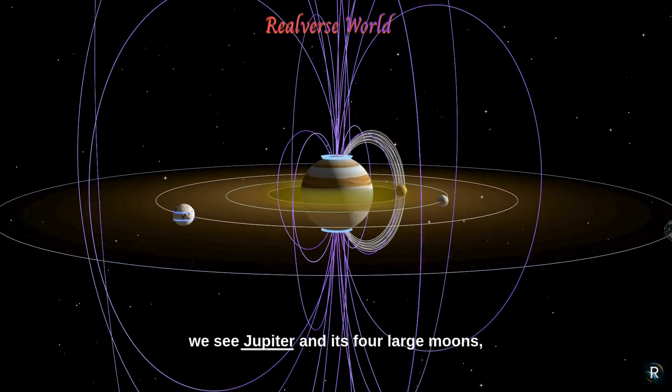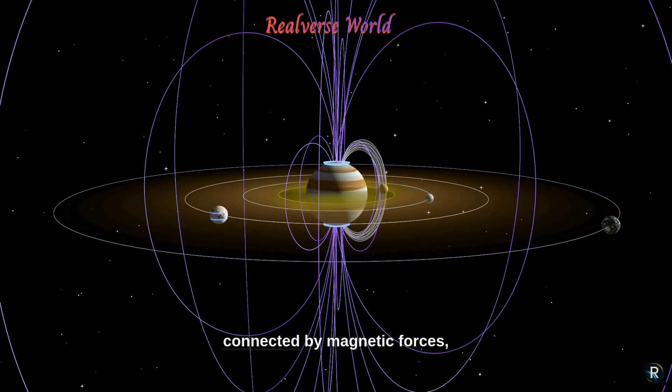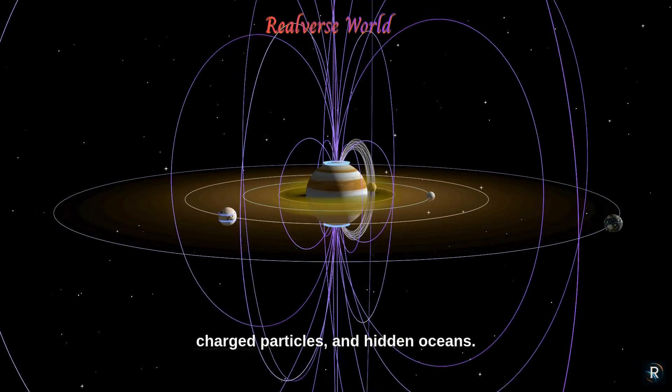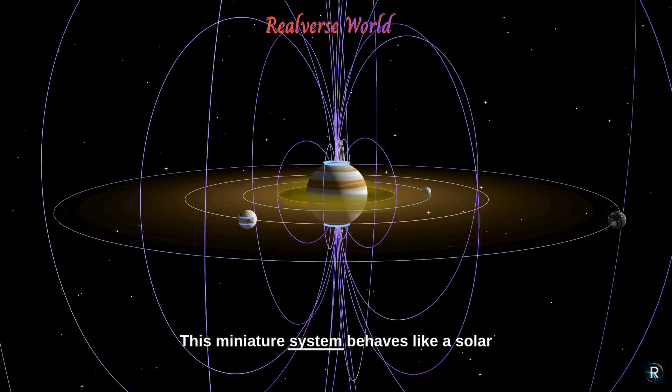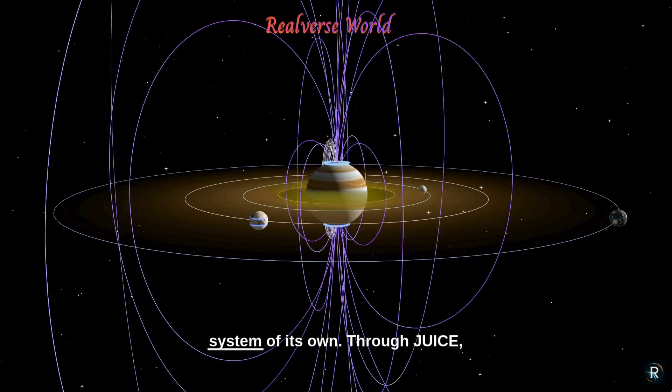As we zoom out, we see Jupiter and its four large moons, connected by magnetic forces, charged particles, and hidden oceans. This miniature system behaves like a solar system of its own.